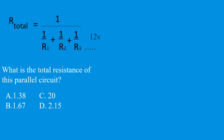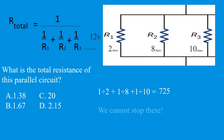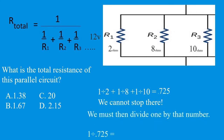Let's do another one. What is the total resistance of this parallel circuit? We look right away and see that our smallest resistor is two, so we know C and D are incorrect. We take 1÷2 plus 1÷8 plus 1÷10, then push enter — that gives us 0.75. We must then divide one by 0.75, giving us 1.3793, which we round up to 1.38.